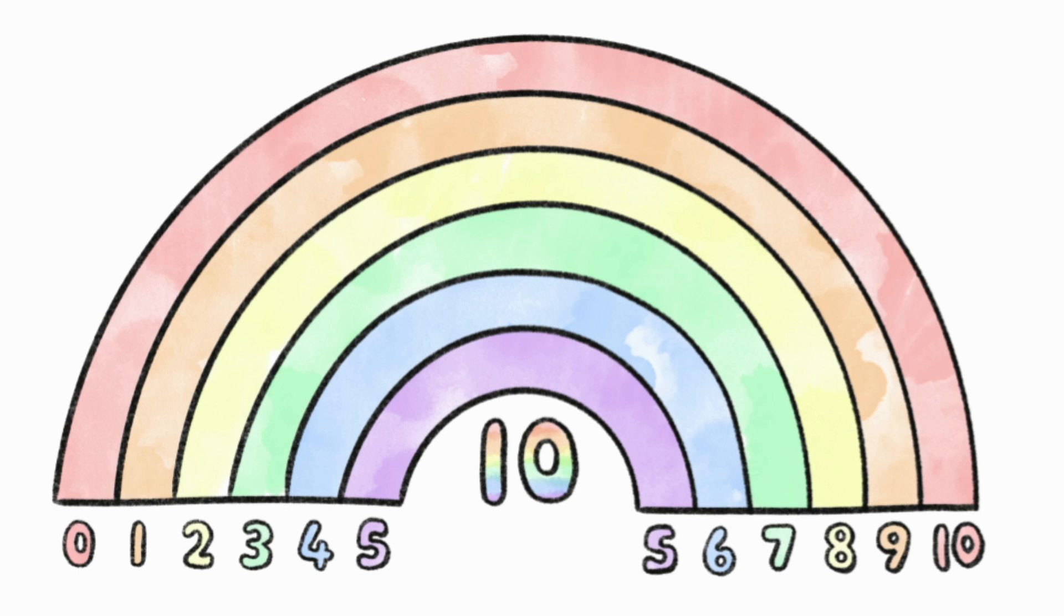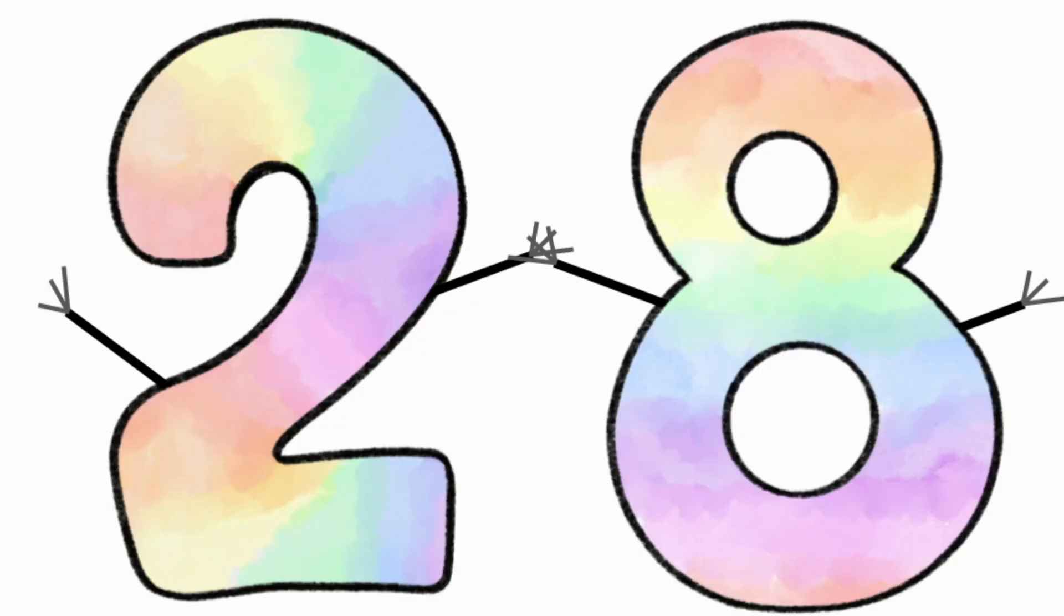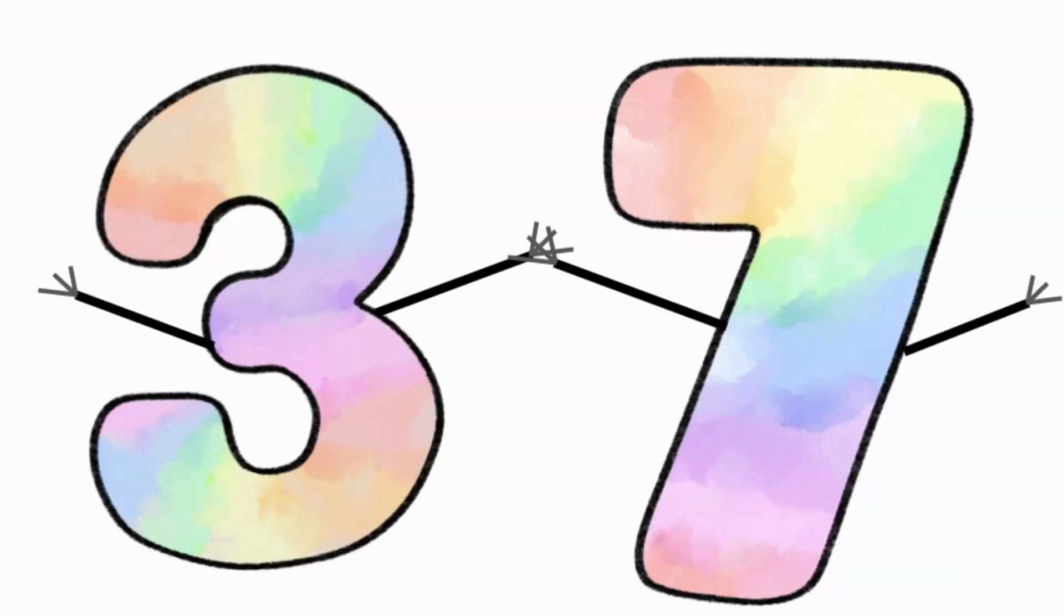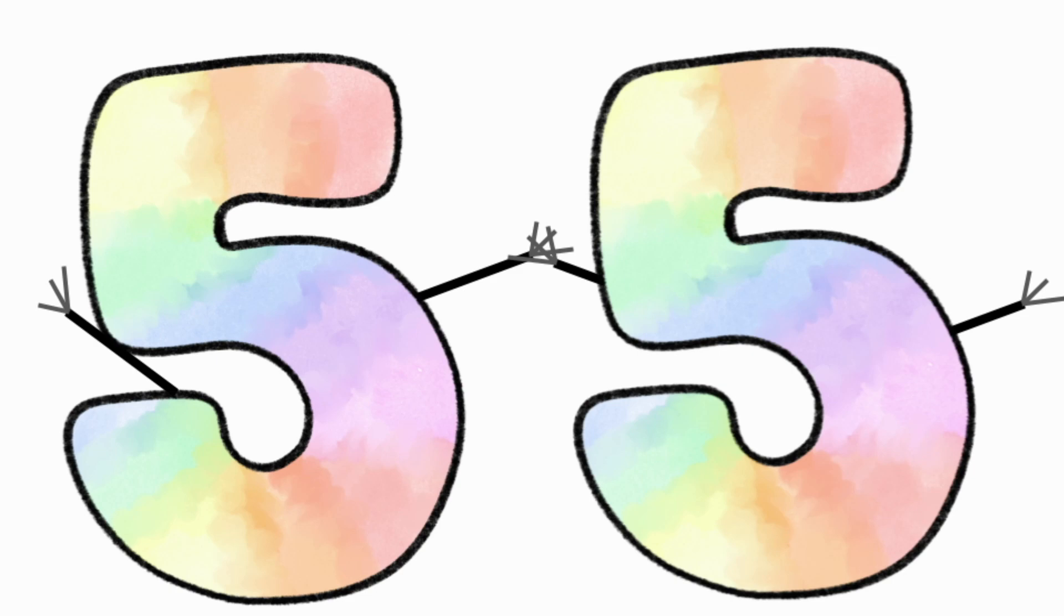We call our rainbow facts friends of 10 because they always hold hands to make 10. 10 and 0 make 10. 9 and 1 make 10. 2 and 8 make 10. 3 and 7 make 10. 6 and 4 make 10. 5 and 5 make 10.